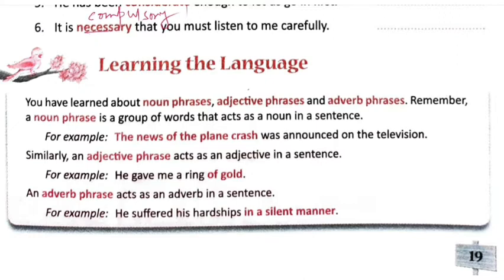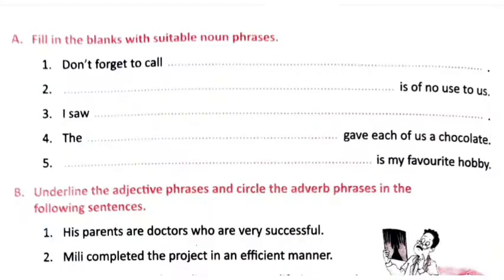Similarly, an adjective phrase acts as an adjective in a sentence. For example: 'He gave me a ring of gold' — 'of gold' is the adjective phrase. An adverb phrase acts as an adverb in a sentence. For example: 'in a silent manner' — it shows the manner of the verb.